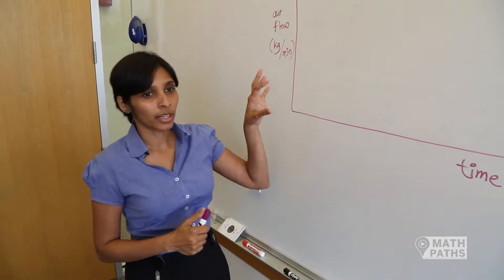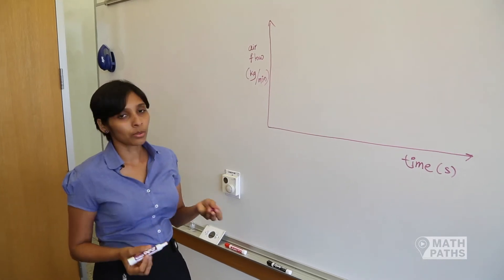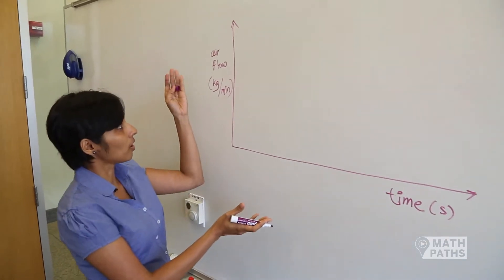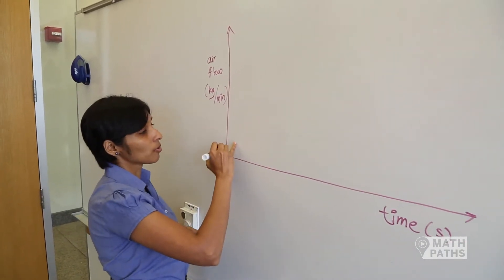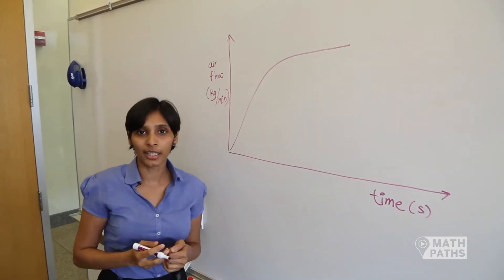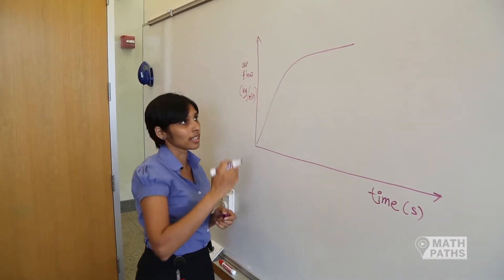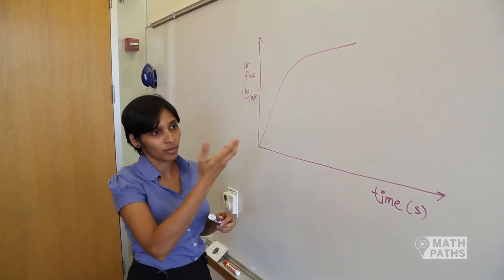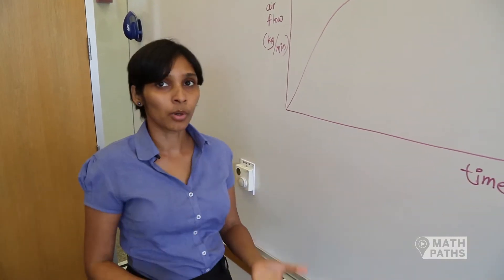So let me talk about the airflow control specifically. What does it mean to control the flow? For example, I have a graph of airflow versus time, and I want the flow to follow a specific profile like this. How can I get it to do that? That's my goal — I want the air to flow like this. So the first thing we need to do in order to change the behavior of the airflow is to understand what it actually does.